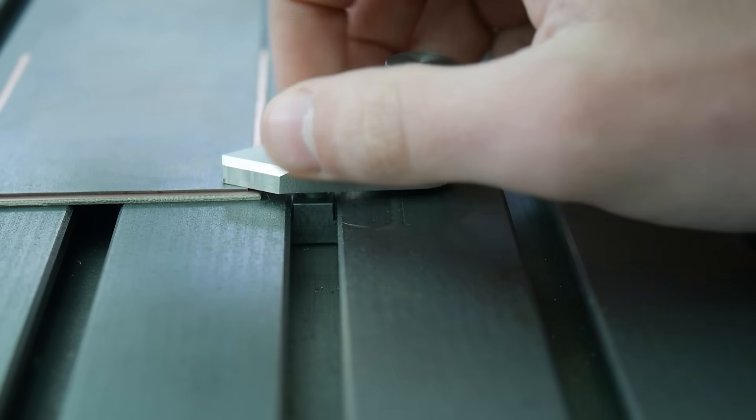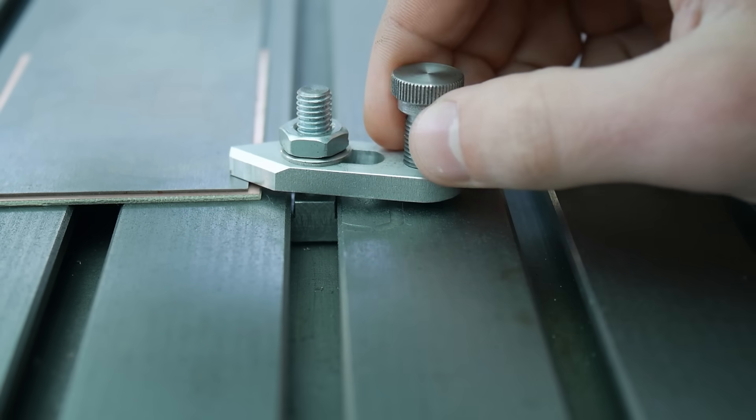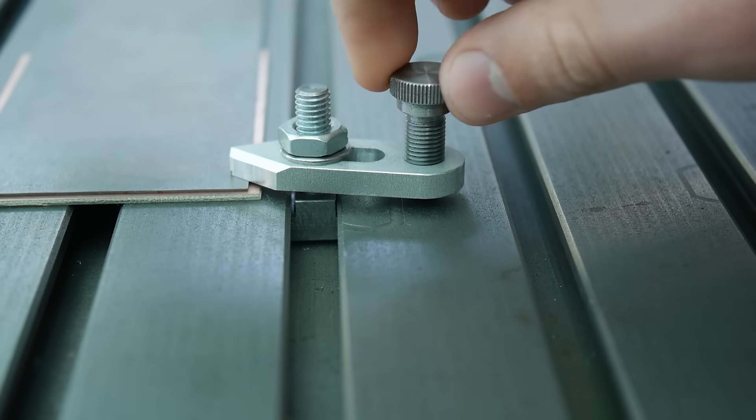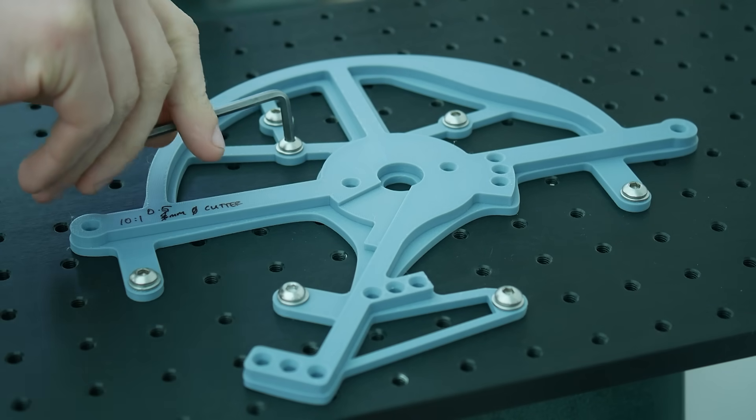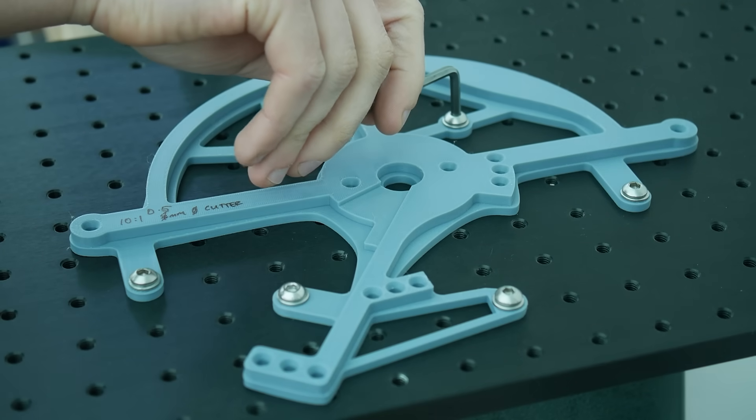The tourbillon cage is one of the most critical sub-assemblies in a tourbillon watch movement because it supports all the parts of the escapement. In this video, I make the tourbillon cage for the pocket watch project.